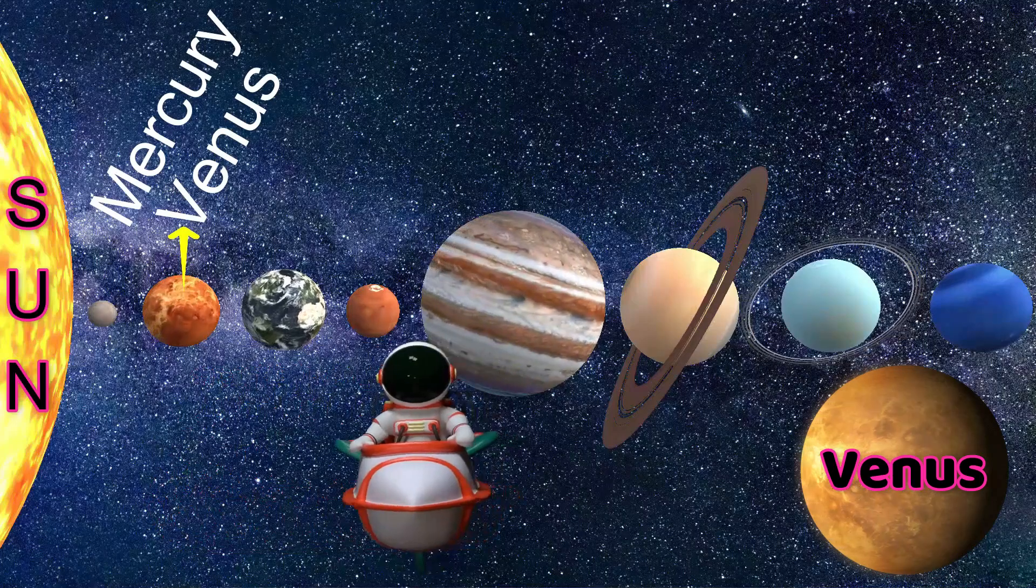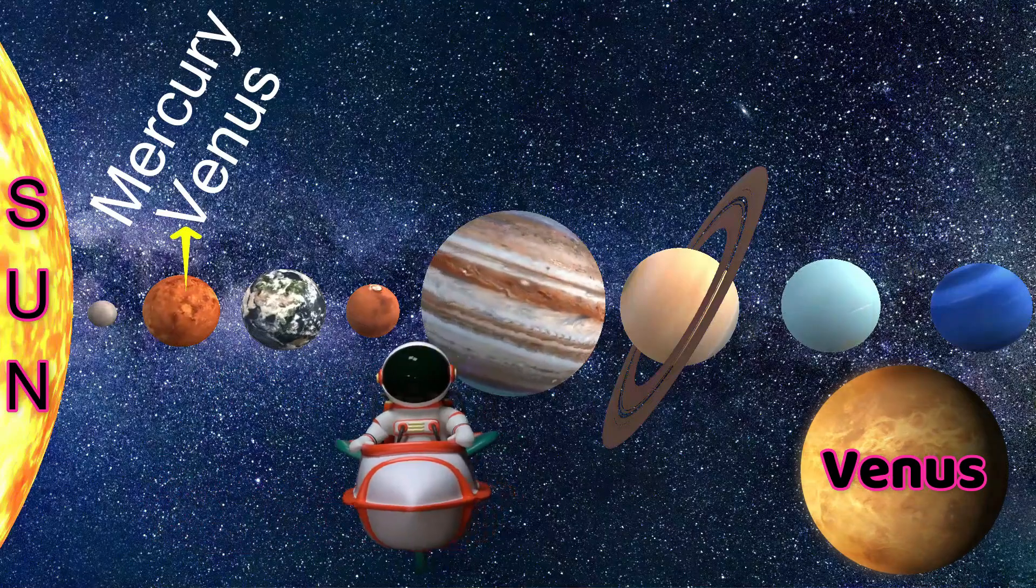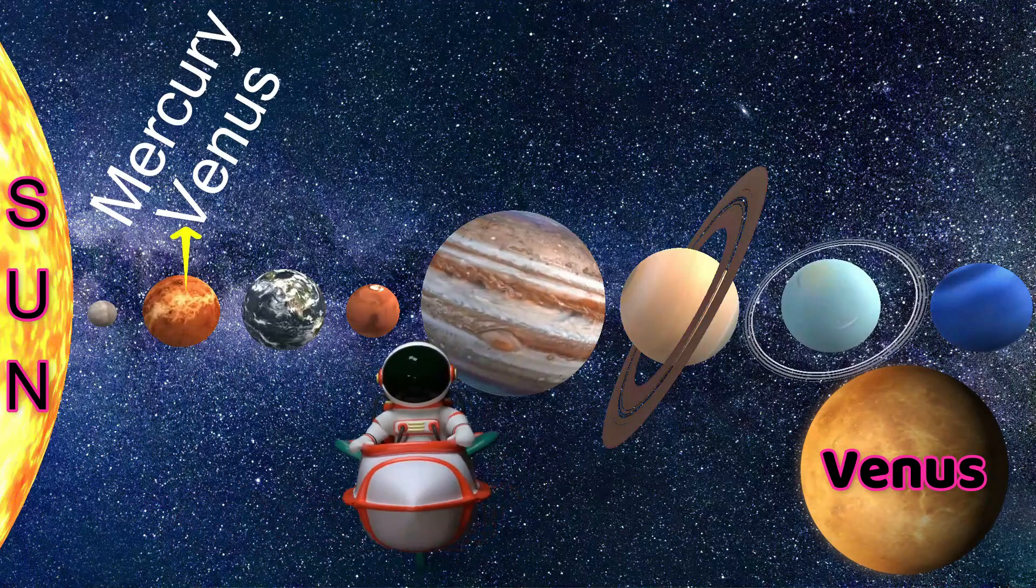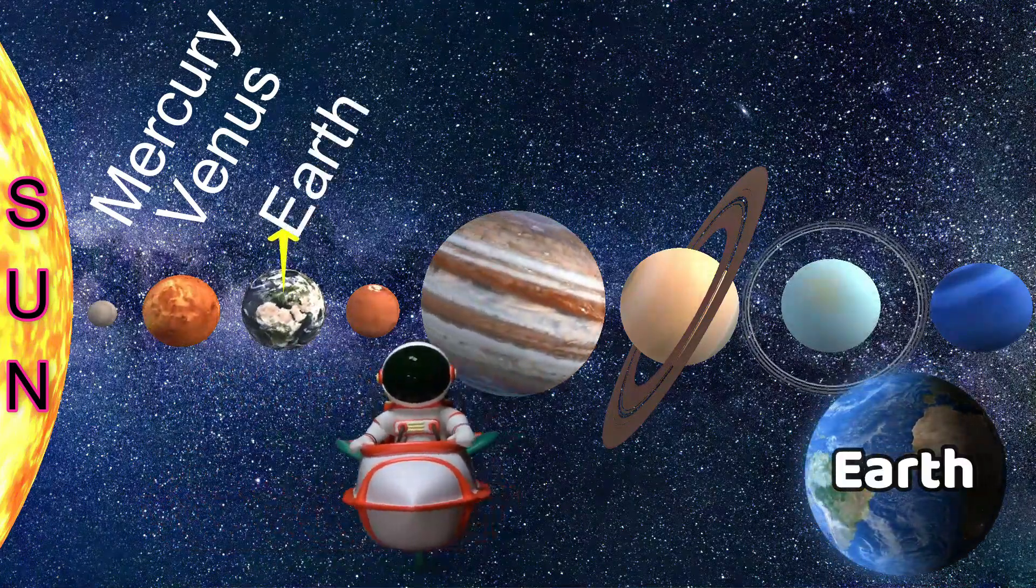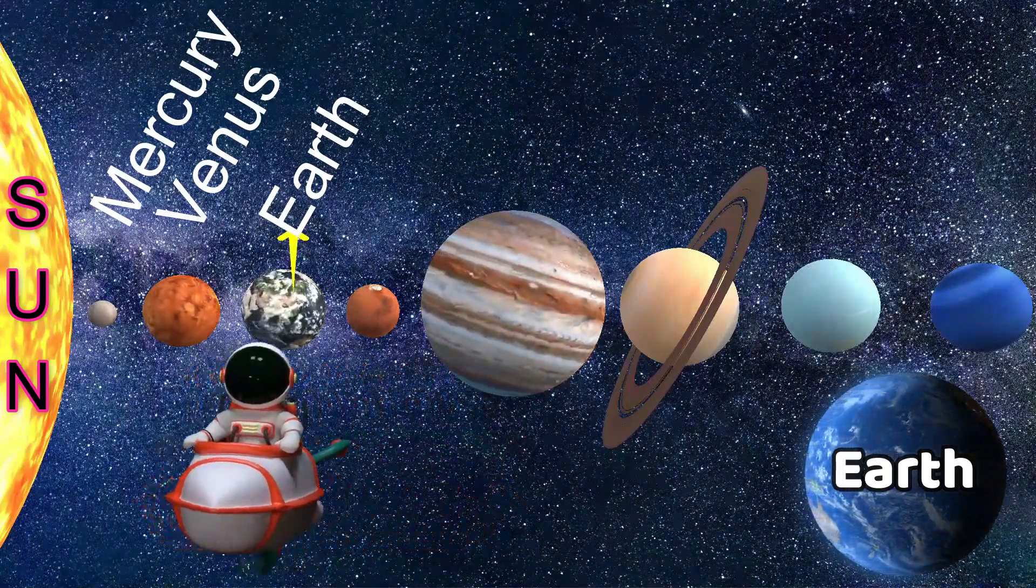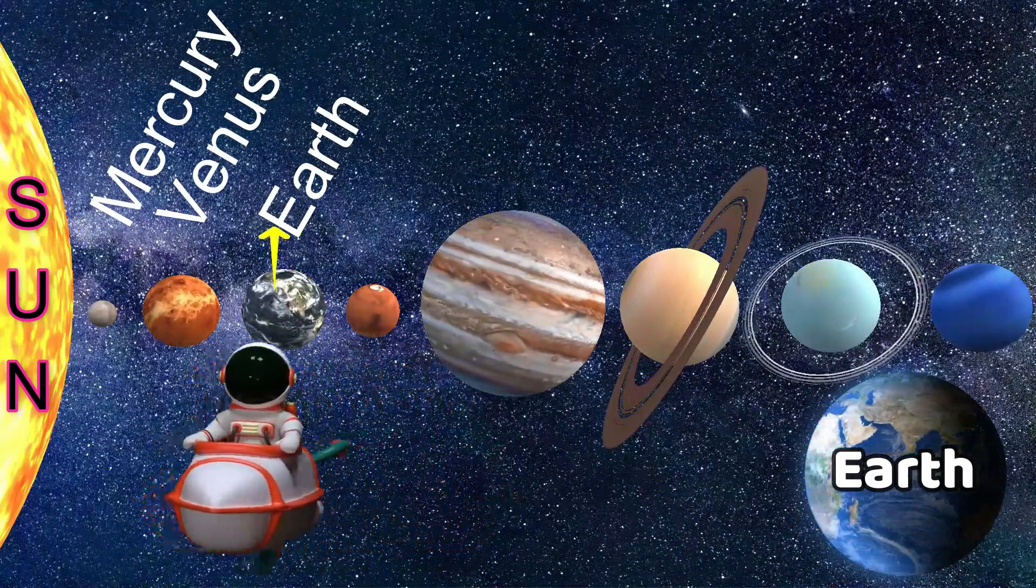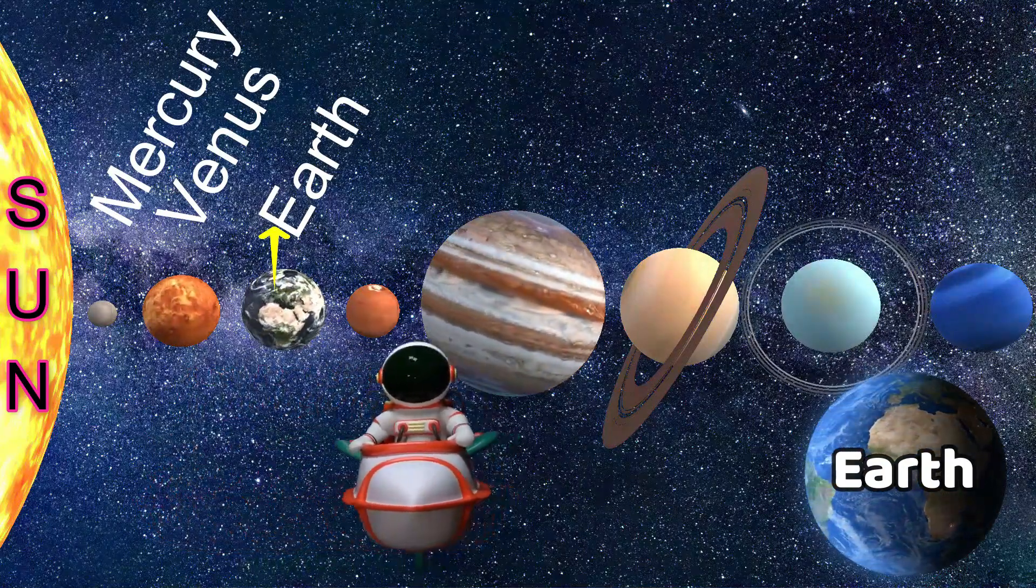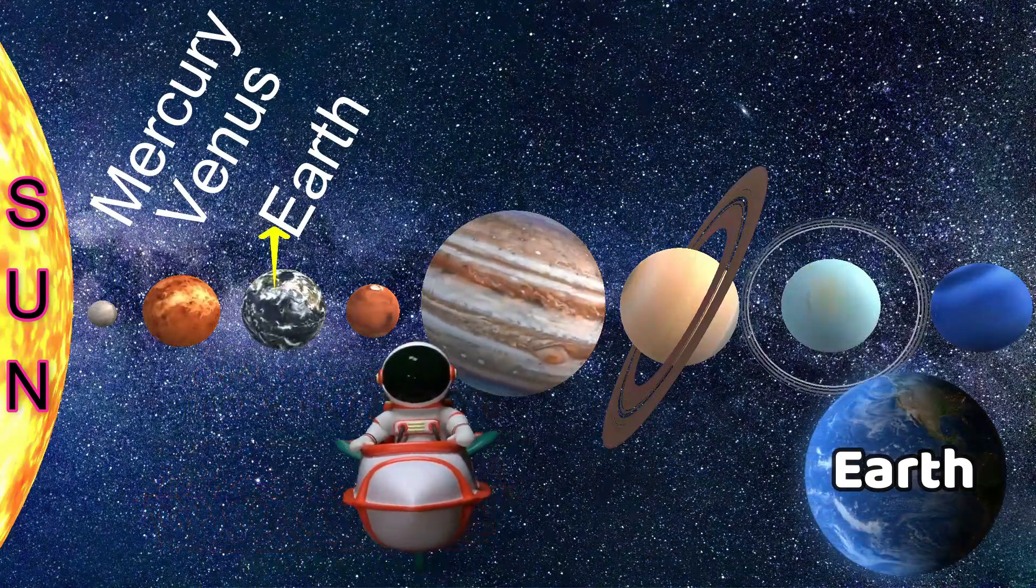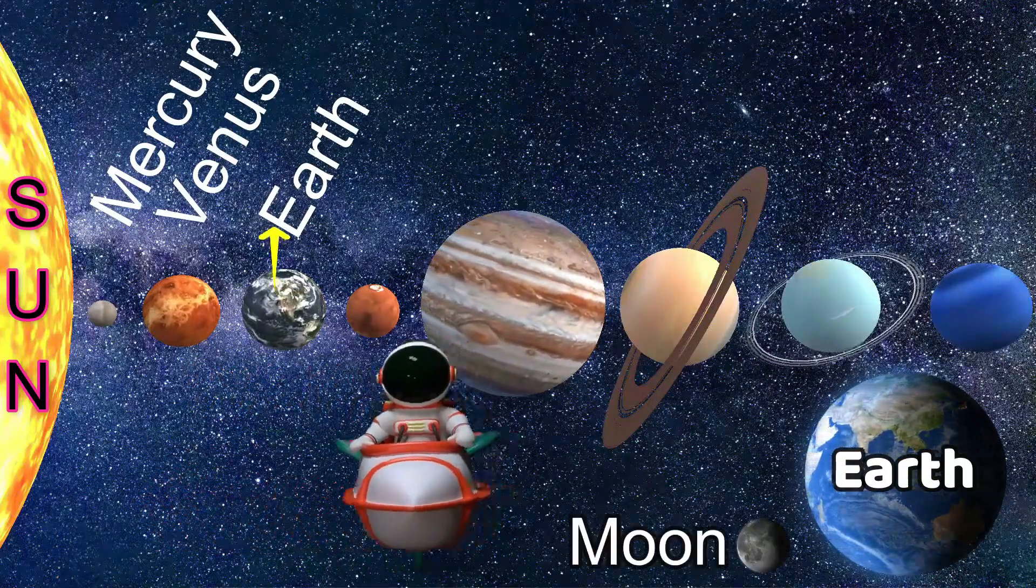The second planet is Venus. This is the hottest planet in the solar system. This is the twin planet of Earth, friends. The third planet is Earth, the only planet to give support to life with a pleasant atmosphere. This is called the blue planet because there is a lot of water. The natural satellite of Earth is the Moon.